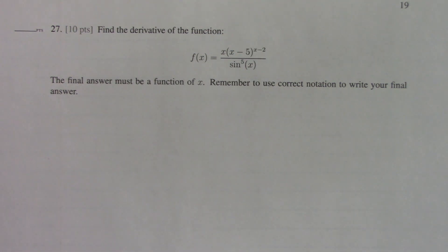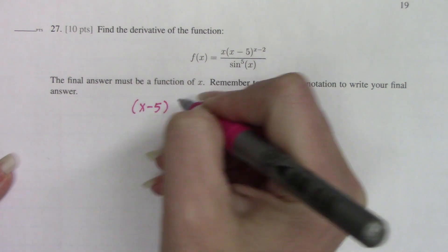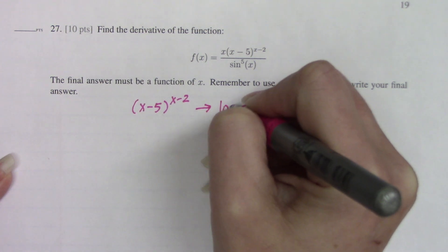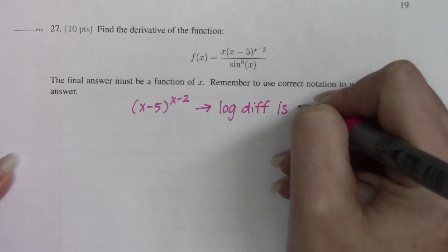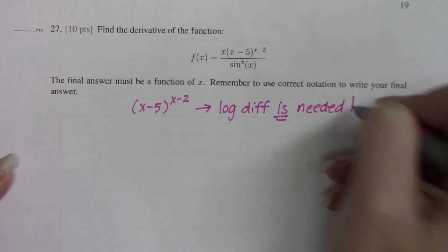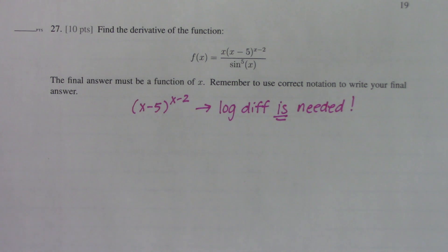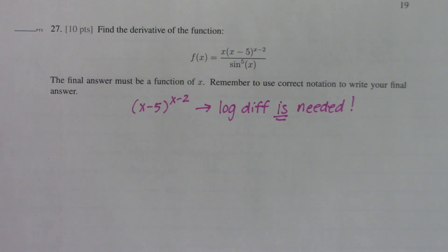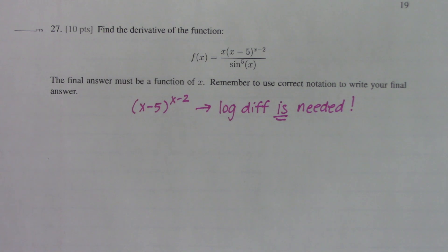That means log diff is required. The x minus 5 raised to the x minus 2 means logarithmic differentiation is needed. Whenever we have variables in the base and variables in the exponent — or something strange happening in the base while at the same time something strange happening in its exponent — the only tool we have in math to fix that is logs, because logs have that algebra property which lets you separate the exponent from its base.